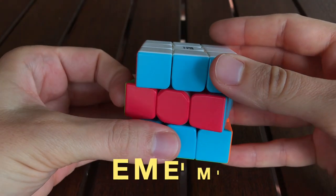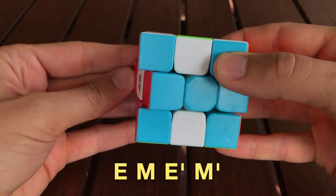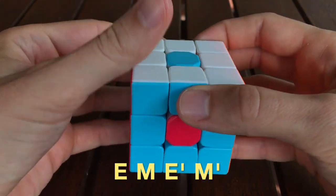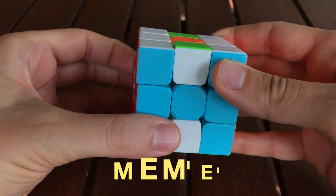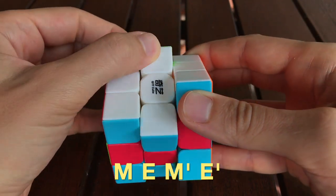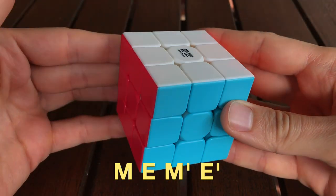So it turns out, if you perform a commutator, you can undo it by performing a different commutator that uses the same first two moves, but in reverse order. So with this algorithm, E M E' M', if you do M E M' E', this will undo the first commutator.